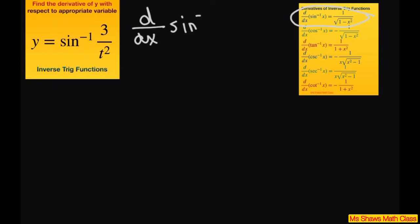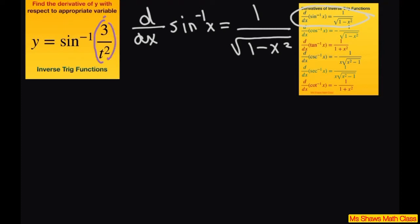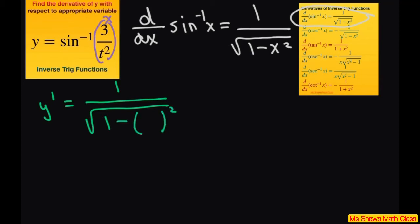When you differentiate inverse sine, that equals 1 divided by the square root of 1 minus x squared. In our case, x is 3 divided by t squared. So we're going to write y prime equals 1 divided by the square root of 1 minus x squared, where x is 3 divided by t squared.